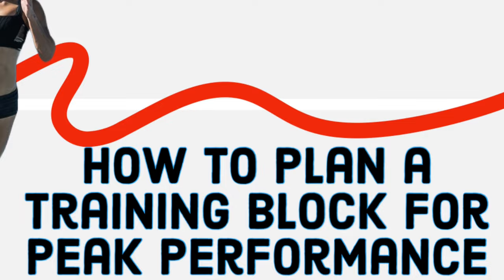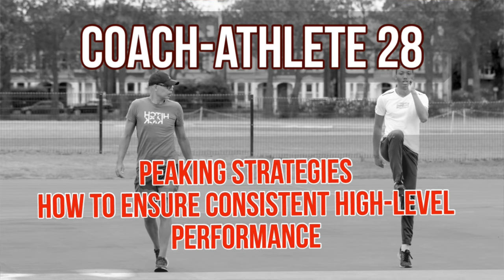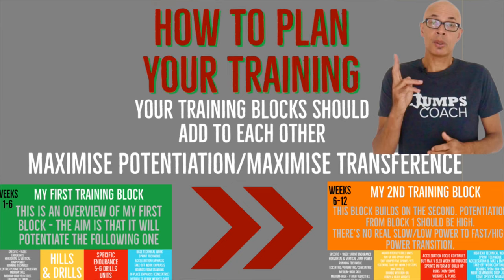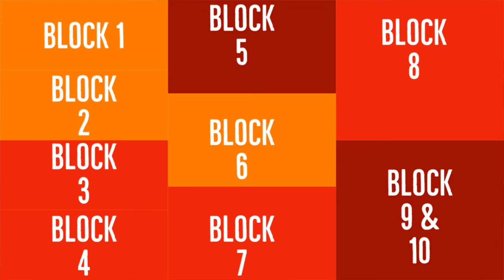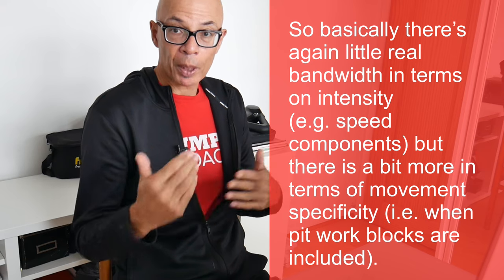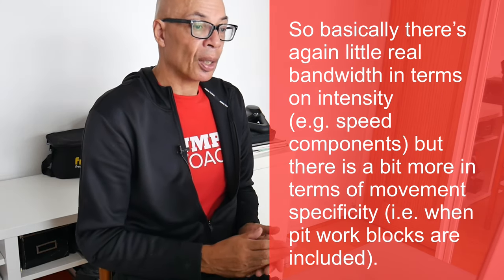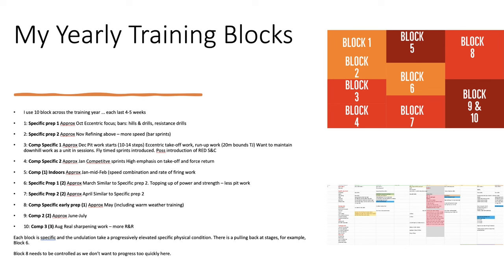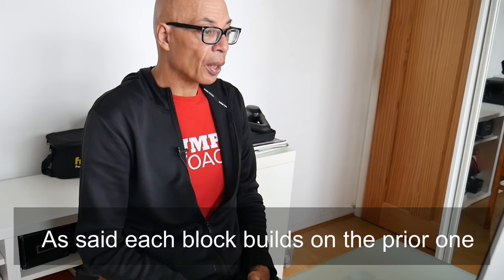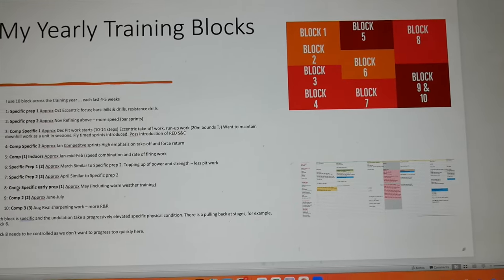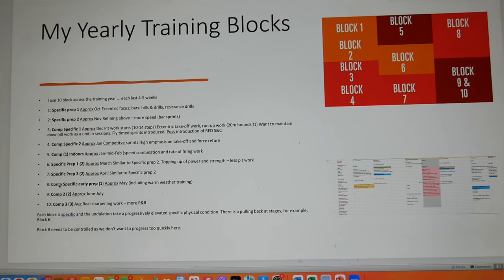I have 10 blocks across the training year, and I've colour-coded them in oranges and reds to indicate that nothing backs off from optimised performance. By using hot colours — usually reserved for the goals at the end of a linear periodization programme — you can see that I'm trying to keep everything at high intensity. Each block lasts 4 to 5 weeks, and I've given a brief overview of what I include in each block on the left-hand side of this slide.